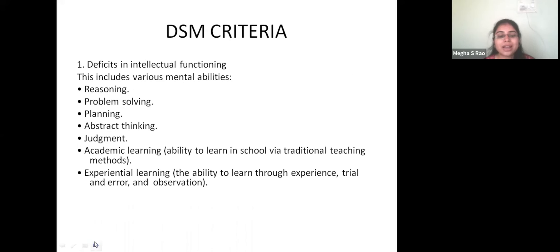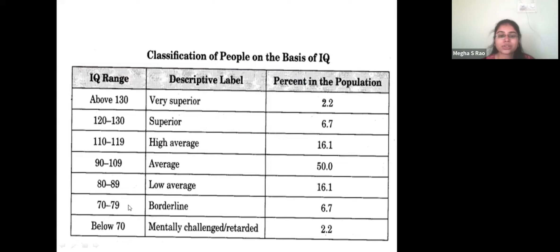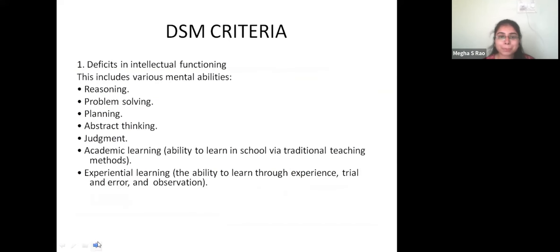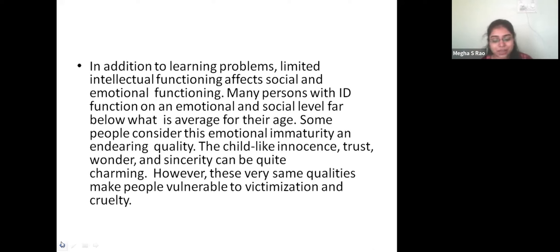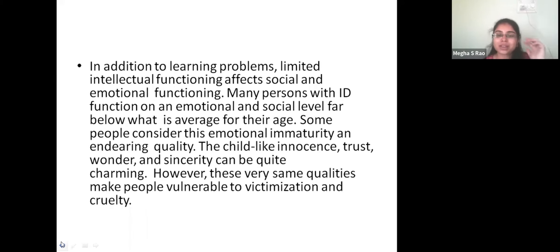Before covering causes, let us understand the levels of mental retardation. Below 70 IQ, there are four categories: mild, moderate, severe, and profound. Mild is the manageable part. Moderate is slightly more severe than mild. Severe is the third level. Profound mental retardation means the child will never be able to function independently.